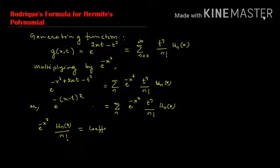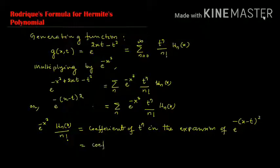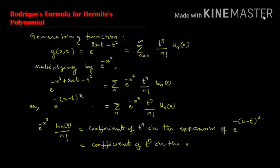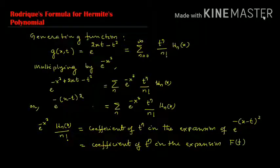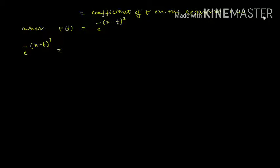This is equal to the coefficient of t^n in the expansion of e^(-(x-t)²). We write F(t) for e^(-(x-t)²), where F(t) = e^(-(x-t)²).